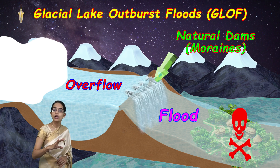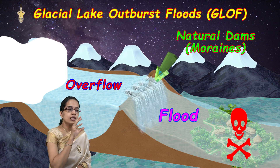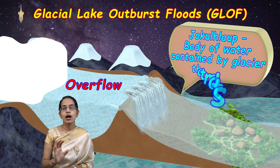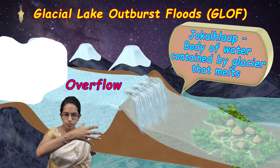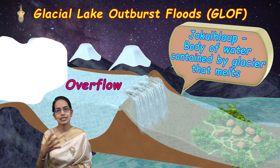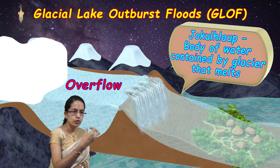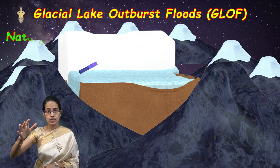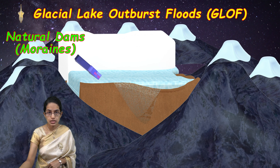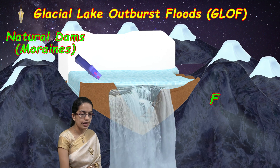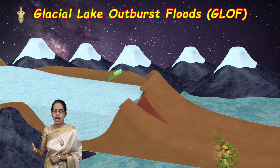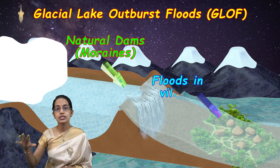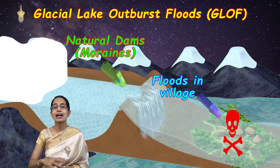There is a brief difference between jökulhlaup and GLOF. Jökulhlaup refers to water contained by the glacier as it melts. In GLOF, moraines create natural dams, and if those dams cannot sustain the pressure, there would be floods — seen as a rapid release of water into the lower regions.